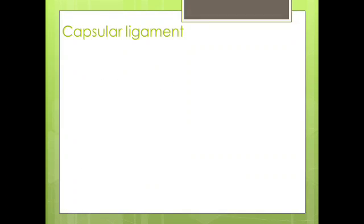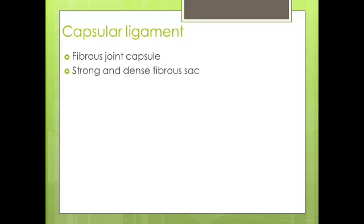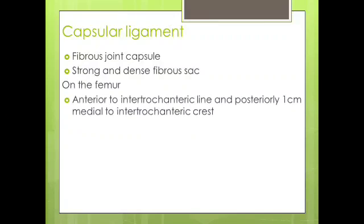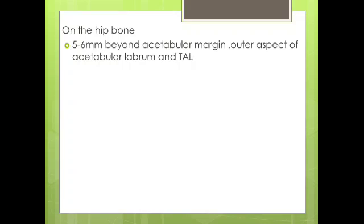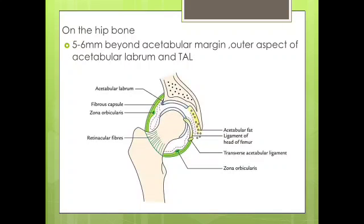The capsular ligament is a strong and dense fibrous sac which encloses the joint. It has attachments on the femur as well as on the hip bone. On the femur, it is attached anteriorly to the intertrochanteric line and posteriorly 1 cm medial to the intertrochanteric crest. On the hip bone, it is attached 5–6 mm beyond the acetabular margin, outer aspect of acetabular labrum, and the transverse acetabular ligament. The capsular ligament is thicker and more superior where maximal stress occurs during standing, and it is thinner posteriorly.